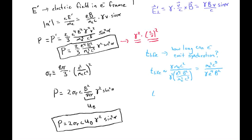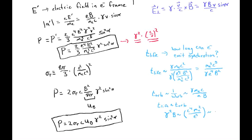We can compare this lifetime to the orbital period, which is of order 1/omega_orbital = gamma m_e c / (eB). For the lifetime to equal one orbit, we need gamma^2 B ~ c^4 m_e^2 / e^3. Plugging in CGS values (c = 3e10, m_e = 1e-27, e = 5e-10), this requires B ~ 10^16 CGS, or for gamma in the range 10–100, a B field of order 10^12 to 10^14 Gauss — a very strong magnetic field.